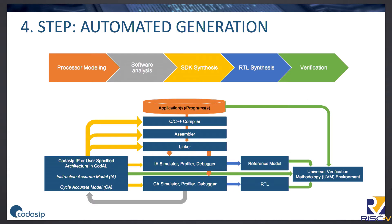The last step is automated generation. In CodaSIP Studio it is possible to automatically generate everything from the high-level description. What you need to do is generate the SDK — the software tools — generate new RTL, and generate the verification environment. When you add a new instruction it is necessary to regenerate all the tools and RTL, because they will then automatically recognize the new instruction.